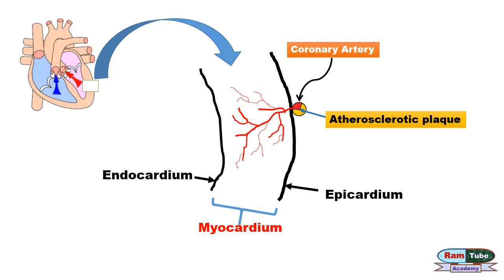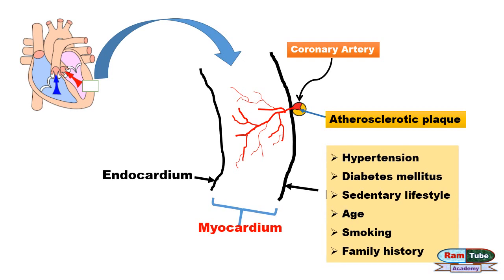These plaques can block the blood flow through the vessels partially or completely. The multiple risk factors involved are hypertension (high blood pressure), diabetes mellitus, sedentary lifestyle (physical inactivity), and age — with increasing age the possibility of atherosclerosis increases.